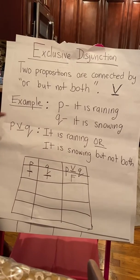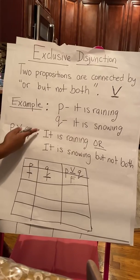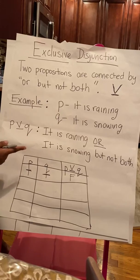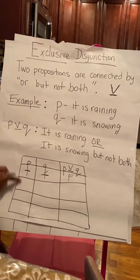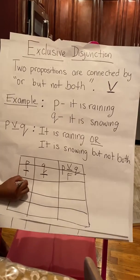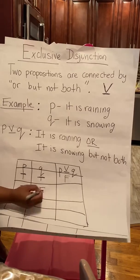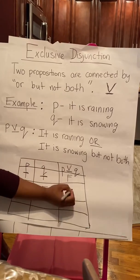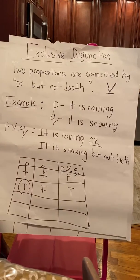Therefore, when you're saying 'or' — like one or the other — it says it's snowing or it's raining. So that means only one of the statements can be true. So if P was true and Q was false, that means this whole statement is actually true because only one of the statements can be true.